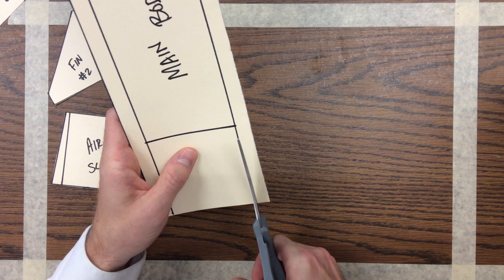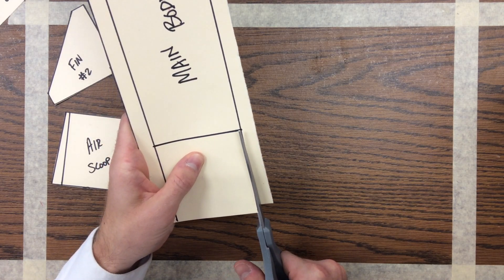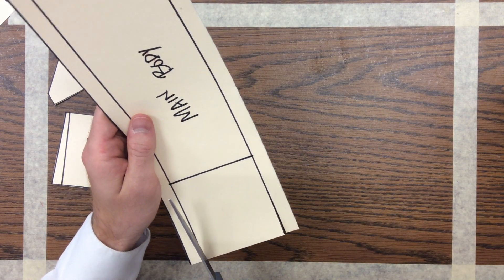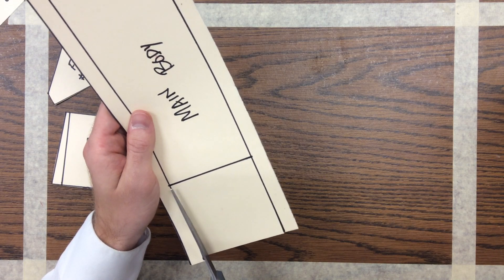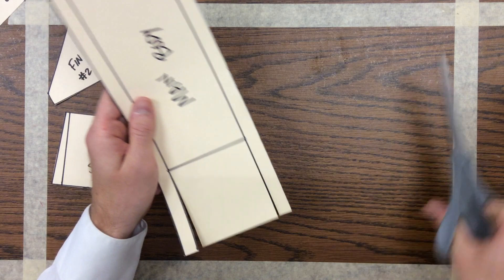For the main body we need to cut up on these slits here. Three inches up that we measured out yesterday. Do it on both sides. Notice we're just cutting up. We're not cutting off anything. We're just cutting up the lines.